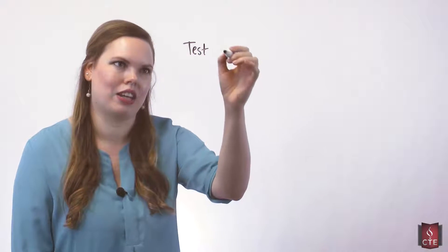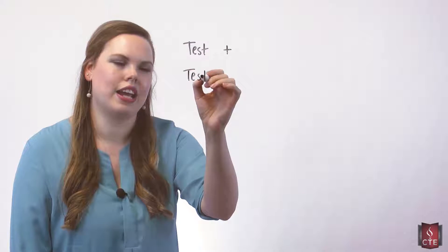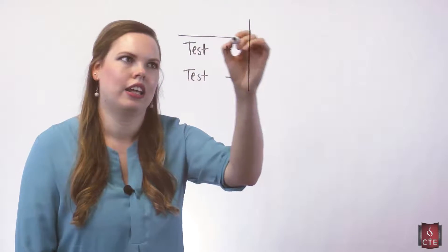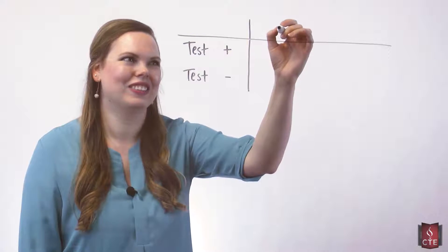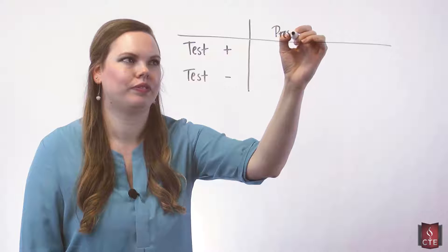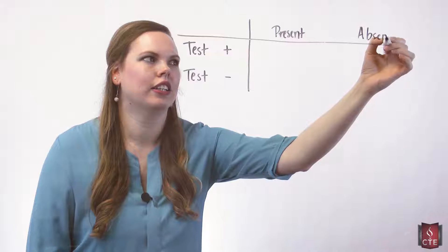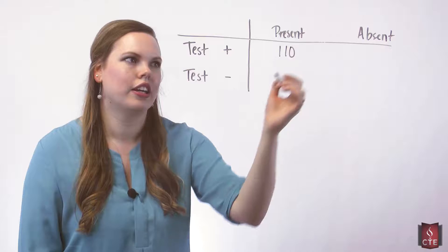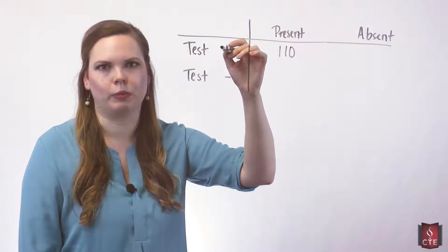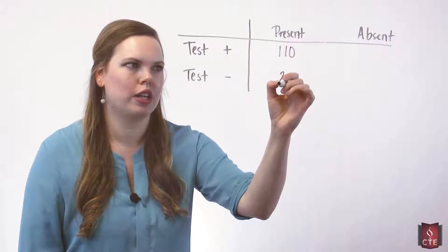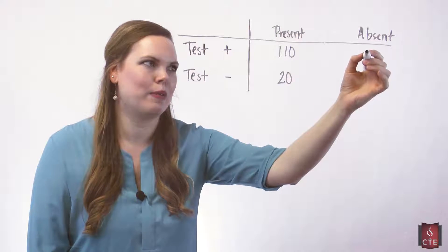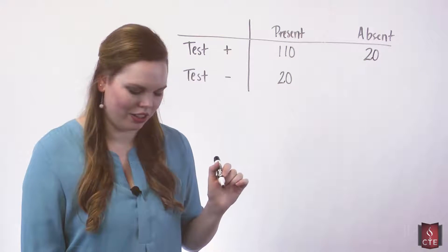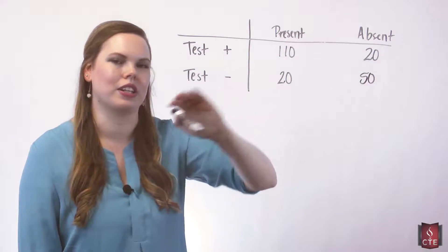This is like a medical test result, a test that is being taken. We can either have a positive result or a negative result. And in the study, we know whether the condition is present or absent — so we're looking at the sensitivity of the test, how good it is. There are 110 people who got a positive result when the condition was present. There are 20 people who got a negative result but still had the condition present — a wrong test result. There are 20 people who did not have the condition but still got a positive result — also wrong. And then there are 50 who have the condition absent and got a negative result.